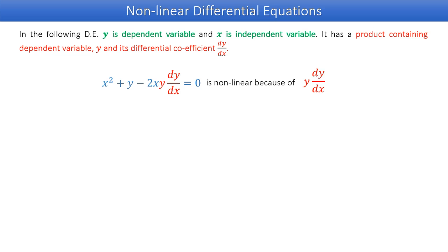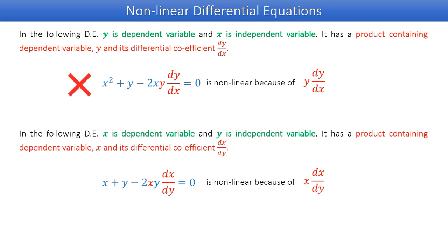In the following differential equation, y is the independent variable and it contains a product of the dependent variable x and the differential quotient dx/dy, hence it is also not a linear differential equation. So I think now you can easily identify which differential equation is linear and which is not.